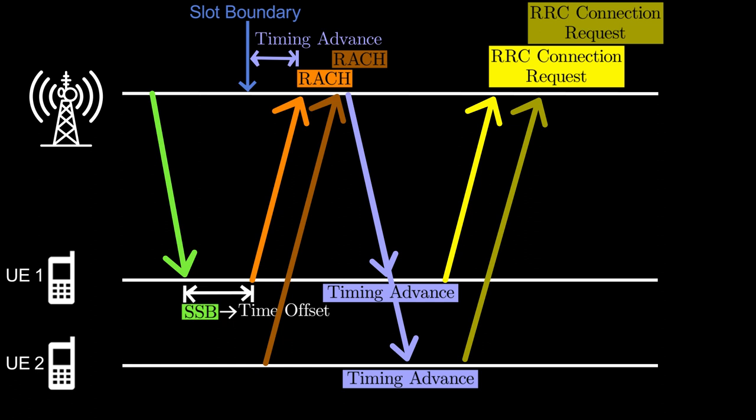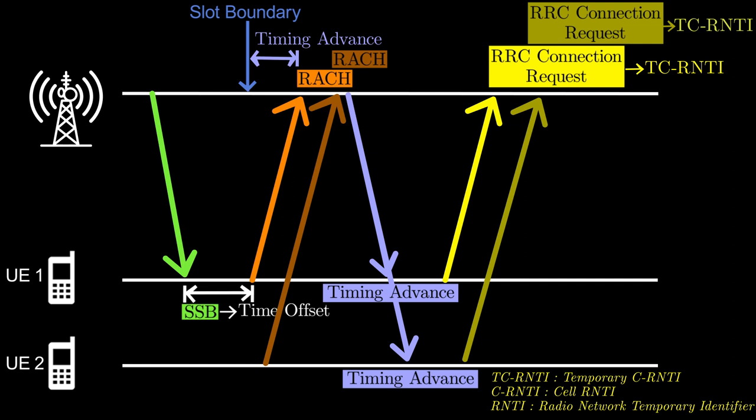So, in order to help base station to distinguish between these two UEs, both UEs arbitrarily choose a random number and send it as a parameter called TCRNTI inside the RRC connection request. UE2 TCRNTI is different from UE1 TCRNTI with a very high probability. Upon receiving RRC connection requests from both UEs, base station selects TCRNTI of one of these two UEs, usually the UE with the strongest signal power, and copies it to a new parameter called CRNTI inside the contention resolution message.